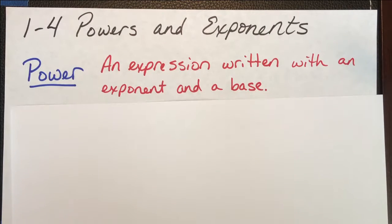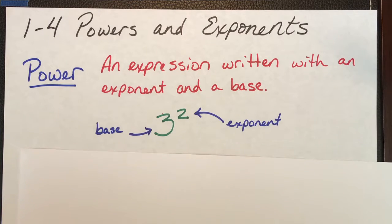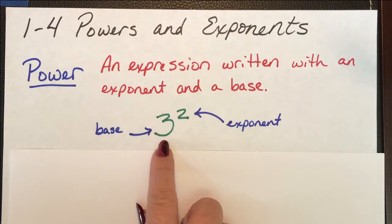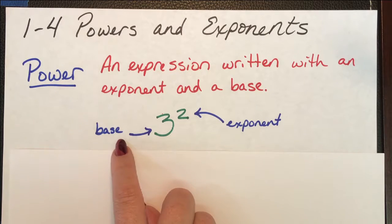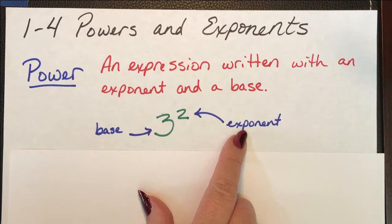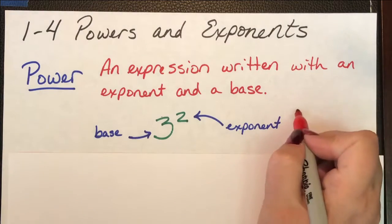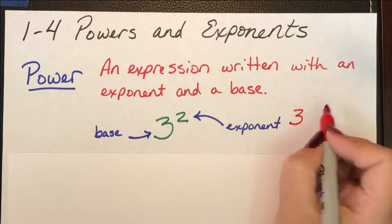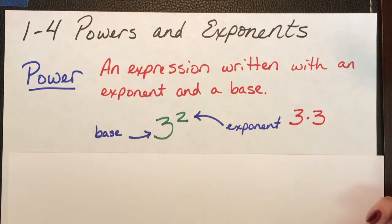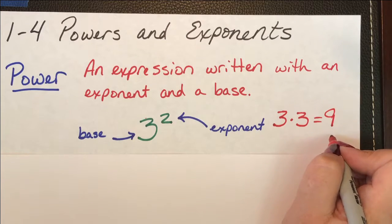A power is an expression written with an exponent and a base. Here we have 3 squared. 3 is the base number and the 2 is our exponent. This means we're going to multiply 3 by itself 2 times. So our completely simplified answer would be 9.